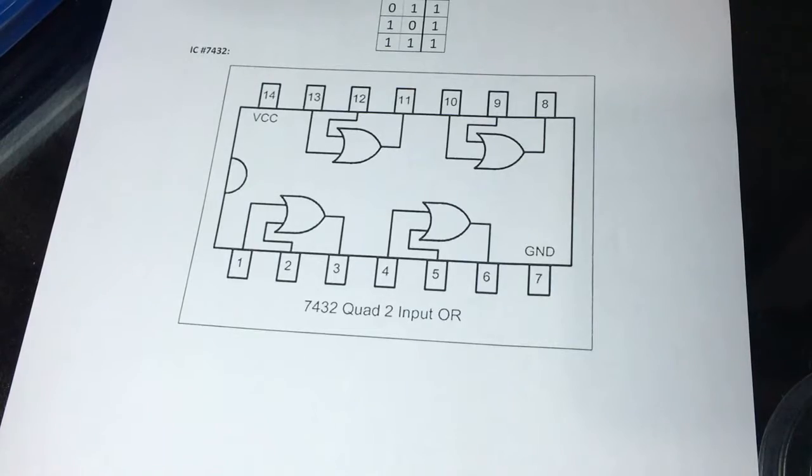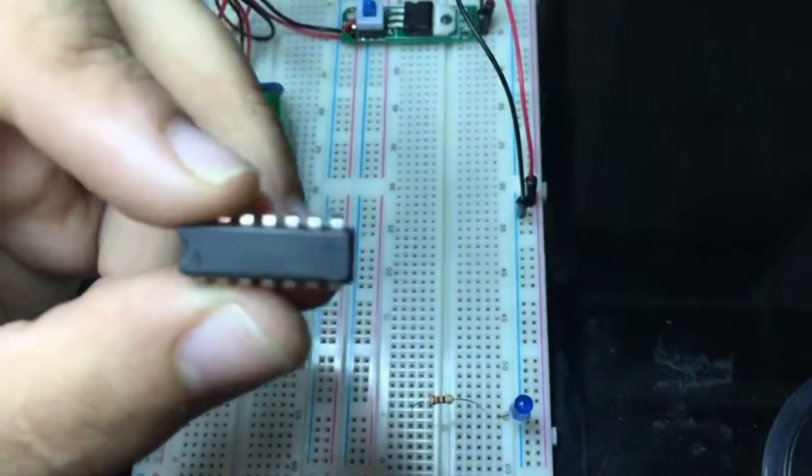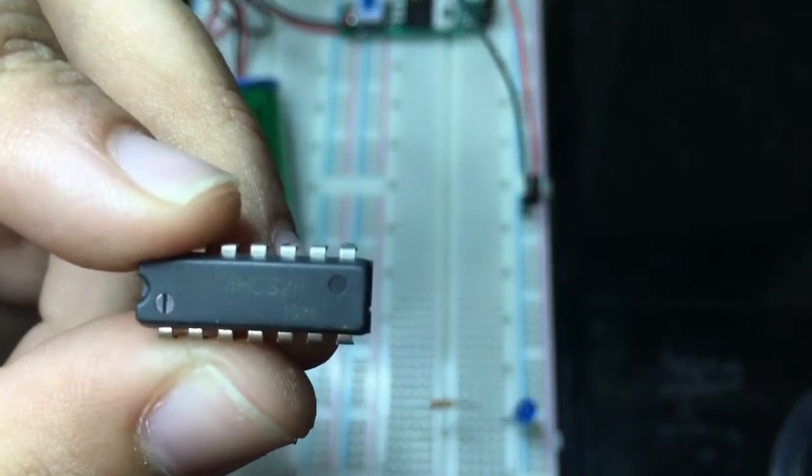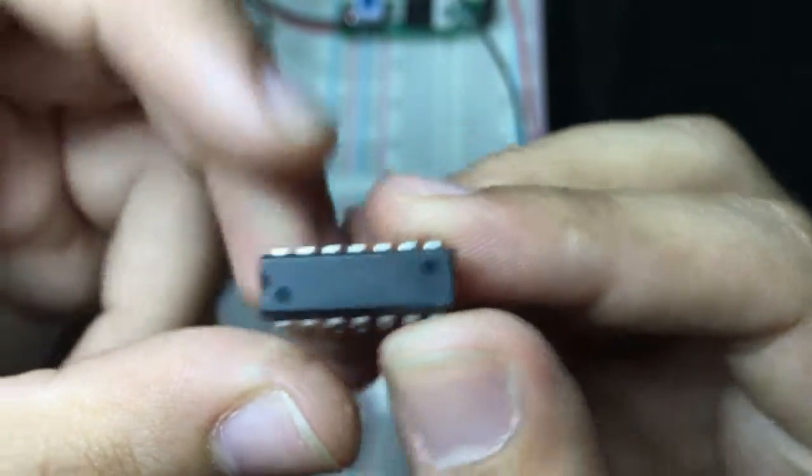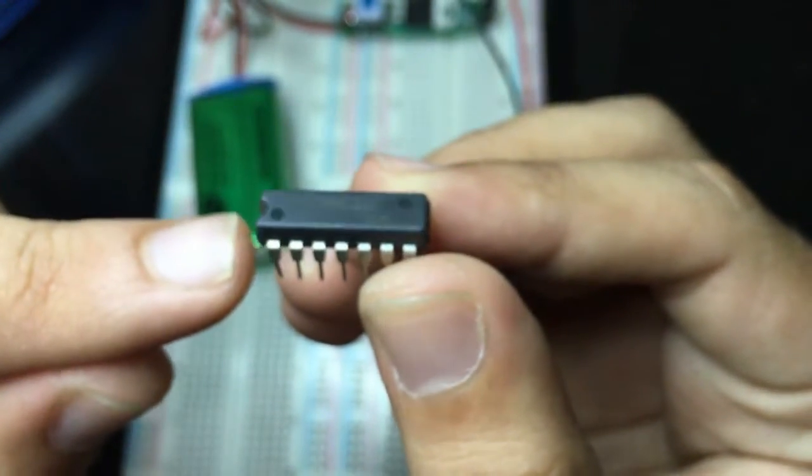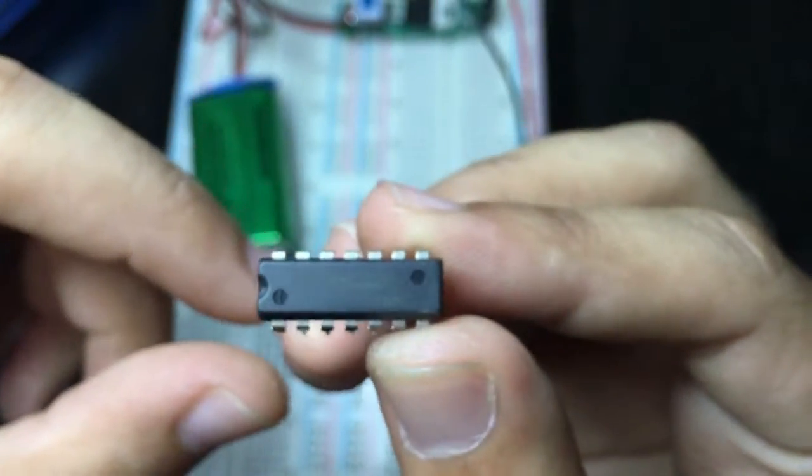So let's move to the breadboard. This is the OR gate IC here, as you see. This is the notch. This is pin number one, two, three, etc. So I'm going to plug this in here.